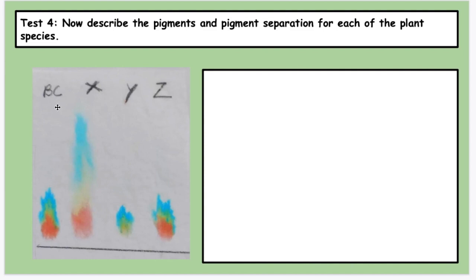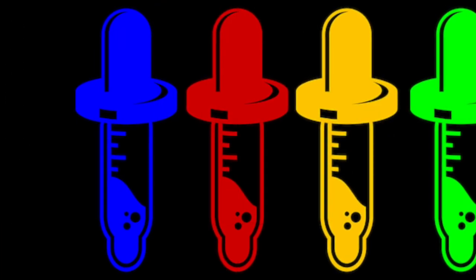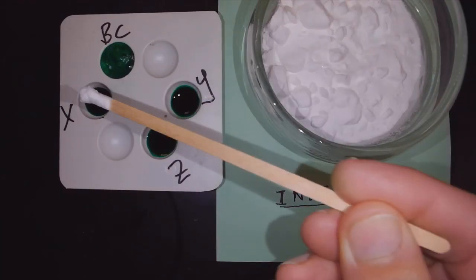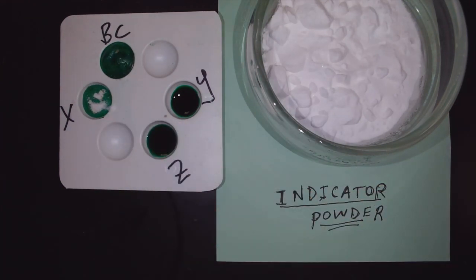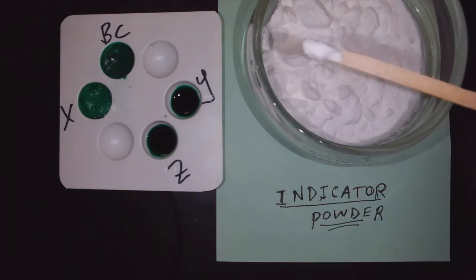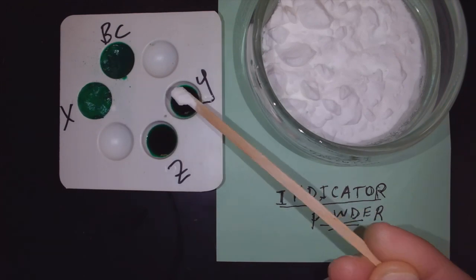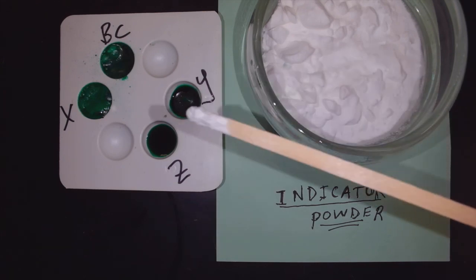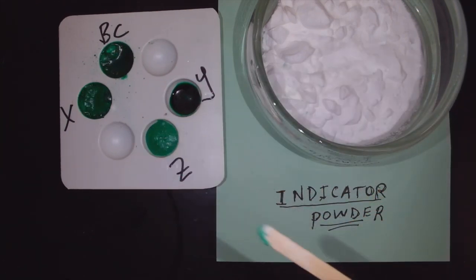Now we're going to talk about indicators. An indicator is something that's going to change in the presence of something. Some indicators change color. In this case, the indicator is going to bubble in the presence of enzyme M. So we take the indicator, add it to the extract of BCXYZ, and look for bubbling. You can see BC, there's definitely bubbling. X, there's bubbling. Z, there's bubbling. And Y, there is no bubble. Keep in mind that bubbling means it contains the enzyme.